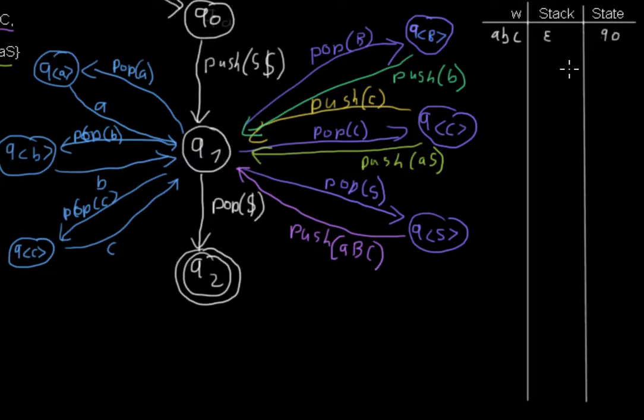So the first thing we have to do is follow the transition to q1, where we push S and dollar to the stack and the word just stays the same. Now the only thing we can do is read the S from the stack, going into qs.